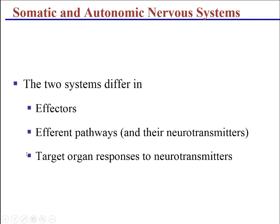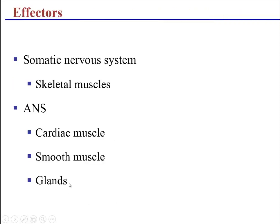The difference between the somatic side and the autonomic side involves the effectors, the pathways, and the neurotransmitters, and just how the target organs respond to the neurotransmitters. In the somatic nervous system, the effectors are always going to be skeletal muscle, but in the autonomic nervous system, the effectors are either cardiac muscle, smooth muscle, or the various glands.